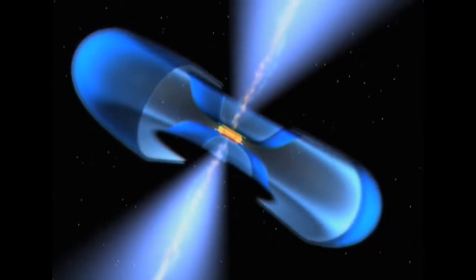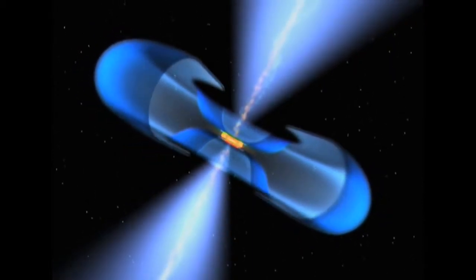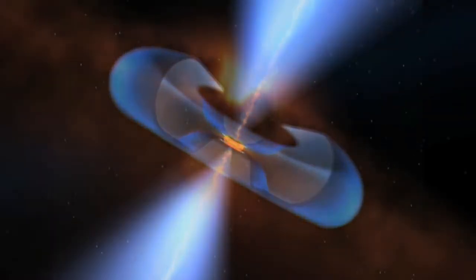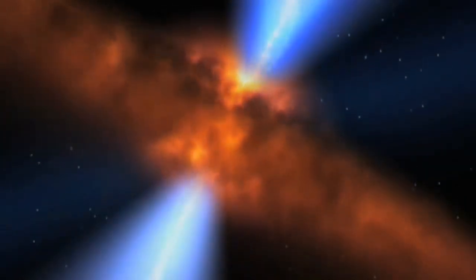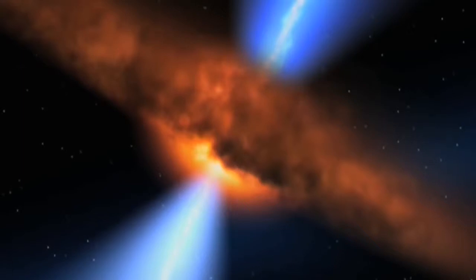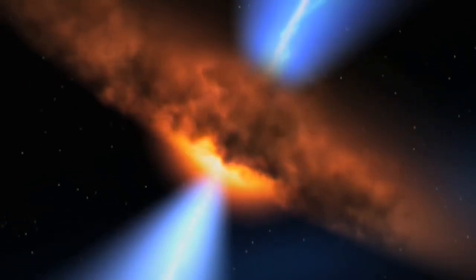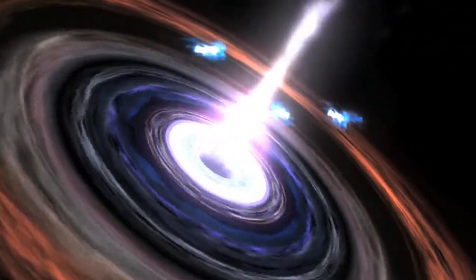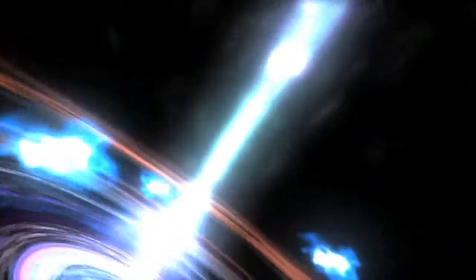The spinning motion of that disk generates magnetic fields that twist round and channel some of the inflowing matter outwards into a pair of high-energy beams or jets. How much energy depends upon the black hole's gravity, and how much matter has already crashed through its event horizon.